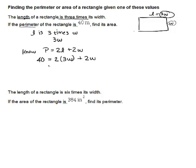And we can simplify that, and we get 6W plus 2W, or 8W, equals 40. So divide both sides by 8, and our W equals 5.